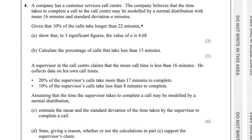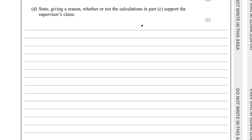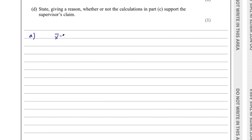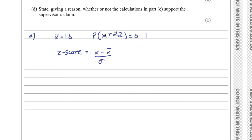Question 4 says a company has a customer services call center. The company believes the time taken to complete a call may be modeled by a normal distribution with mean 16 minutes and standard deviation sigma minutes. Given that 10% of calls take longer than 22 minutes, part A says show that to three significant figures the value of sigma is 4.68. We're going to use the Z-score formula. They give us a mean of 16, and P(X > 22) = 0.1.